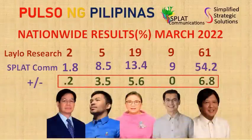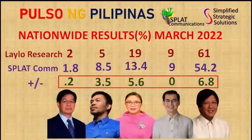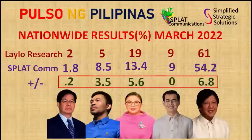Now let us compare our March 1–15 Cailey Survey Summary with the Lalo Research March 15–22, 2022 results. Looking at the Lalo Research results in descending order: former Senator Ferdinand Marcos Jr. leads with 61%; VP Leni Robredo follows with 19%; third is Manila Mayor Isko Domagoso with 9%; fourth is Senator Manny Pacquiao with 5%; and Senator Ping Lacson has 2% preference share nationwide.